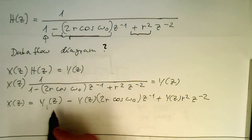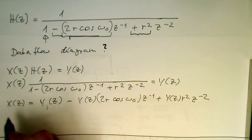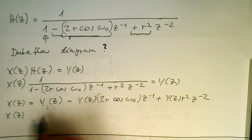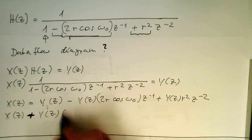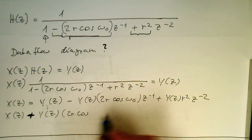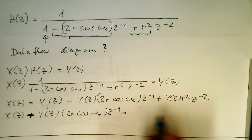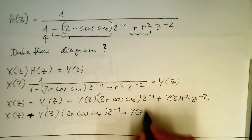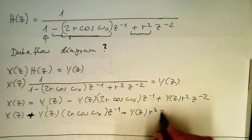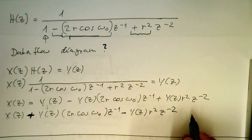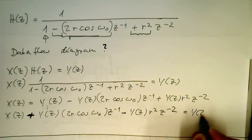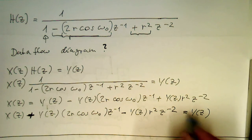So in order to get the output now y of z, we just shovel these two terms over, because these are our delayed terms here. x of z is that plus y of z 2r cosine omega 0, z to minus 1, and then minus y of z r square z to minus 2. So we see the sign inversion here, and then this gives us y of z as an output.